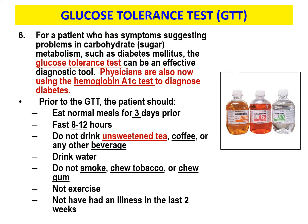Now let's talk about the glucose tolerance test — GTT. For a patient who has symptoms suggesting problems in carbohydrate or sugar metabolism, such as diabetes mellitus, the glucose tolerance test can be an effective diagnostic tool. Physicians now also use the hemoglobin A1c test to diagnose diabetes. There was a time when the GTT was the gold standard for diagnosing diabetes mellitus. People with diabetes mellitus are insulin resistant — they're unable to break down their sugar and get it out of the bloodstream into tissue cells, so blood glucose levels build up.